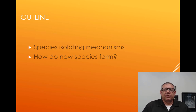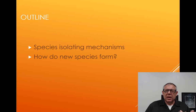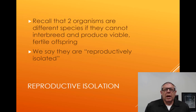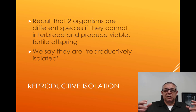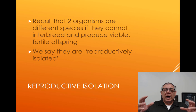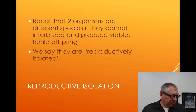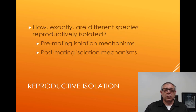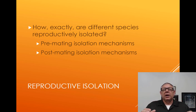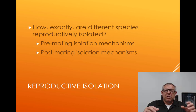We want to talk about species-isolating mechanisms — what keeps different species from interbreeding — and then we'll talk about how species form. We've defined species as two organisms that cannot interbreed and produce viable, fertile offspring. There's a term called reproductive isolation. You can break isolating mechanisms down into pre-mating isolating mechanisms and post-mating isolating mechanisms.